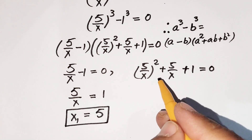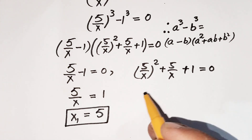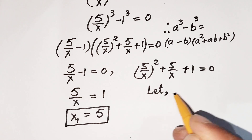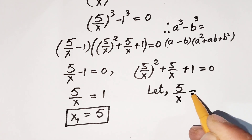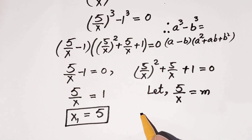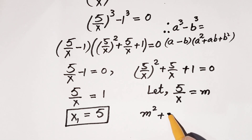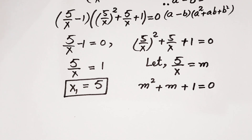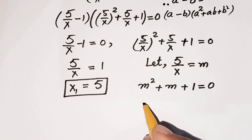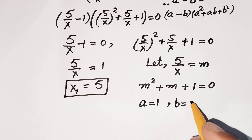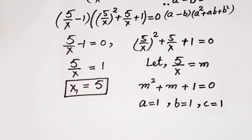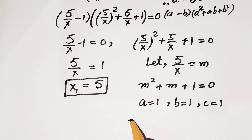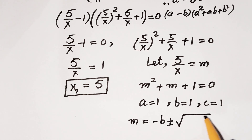Now for the second condition, let us suppose that 5/x equals m. Then the equation becomes m squared plus m plus 1 equals 0. This is a quadratic equation. We solve it using the quadratic formula, where a equals 1, b equals 1, and c equals 1.